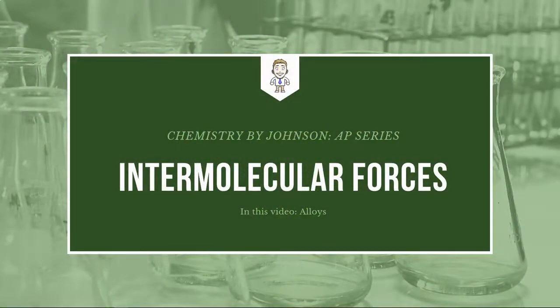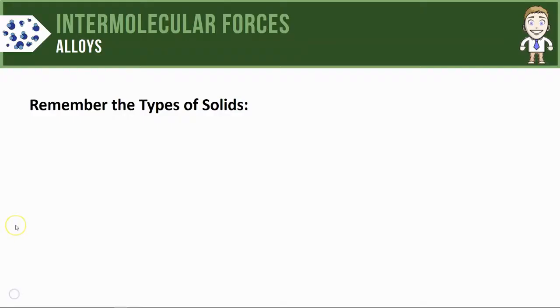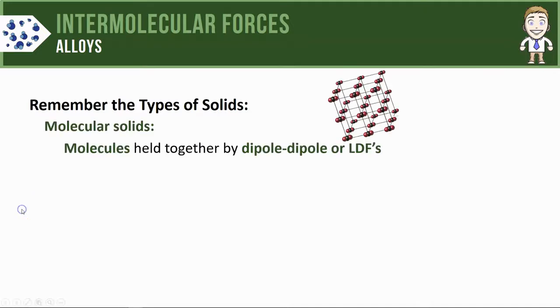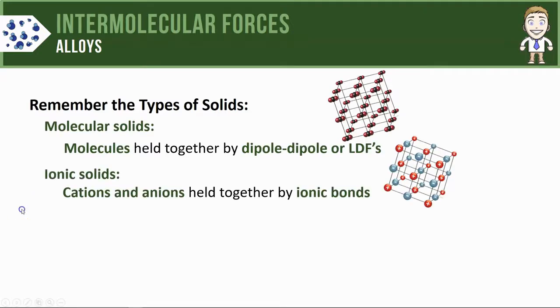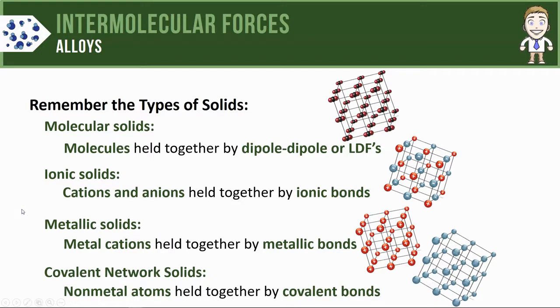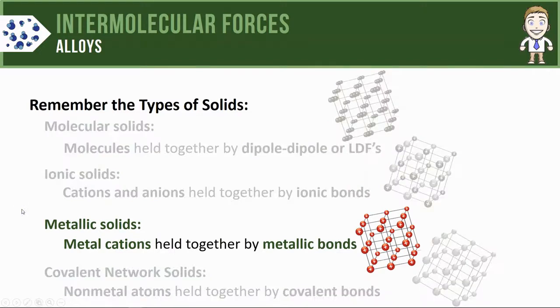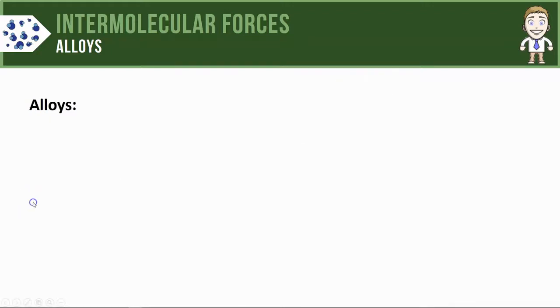Hey everyone, in this AP chem series video we're going to take a look at alloys. First, remember that we've seen lots of different types of solids so far, like molecular solids, ionic solids, metallic solids, and covalent network solids. Metallic solids can create a unique type of mixture called an alloy.